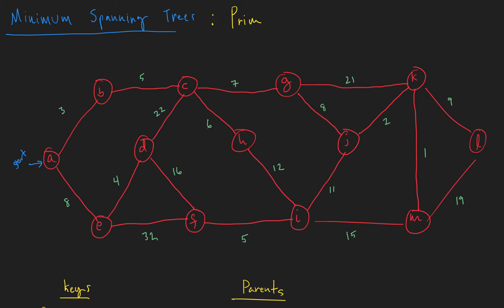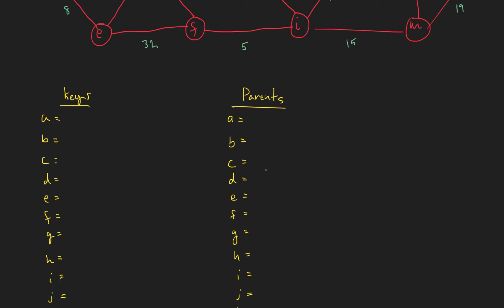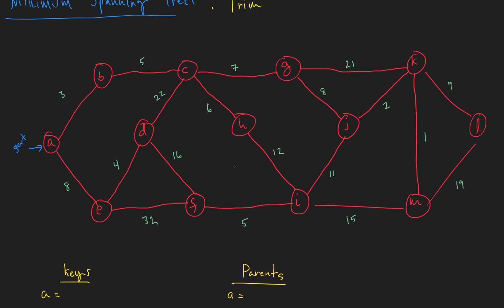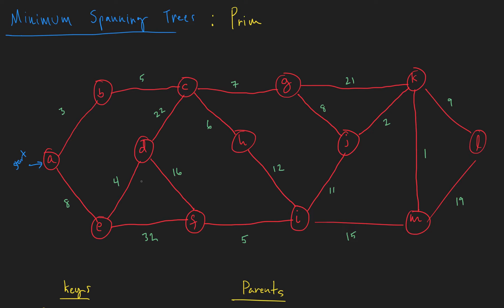Welcome to our 30th video on data structures and algorithms. We're going to do another example of finding a minimum spanning tree within this graph, but we're going to use Prim's algorithm this time. It uses depth-first search and a priority queue of keys to find this minimum spanning tree. We'll start from a node and do a breadth-first search, updating keys as we find them, adding the next edge every time. We'll also keep track of parents so we know where each edge comes from.